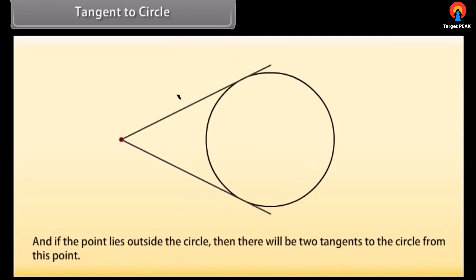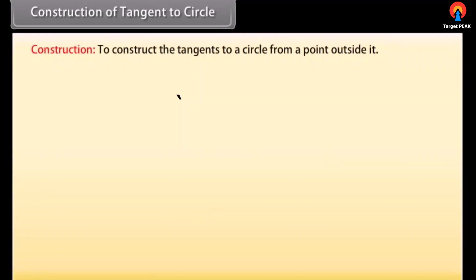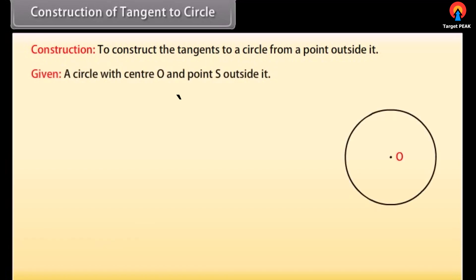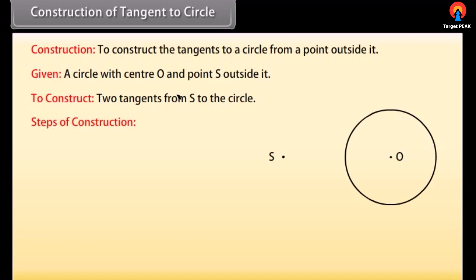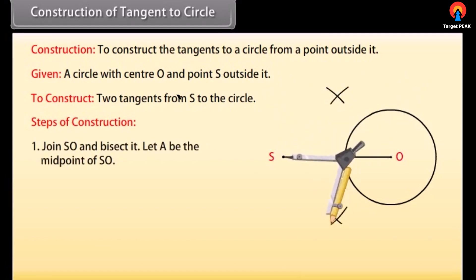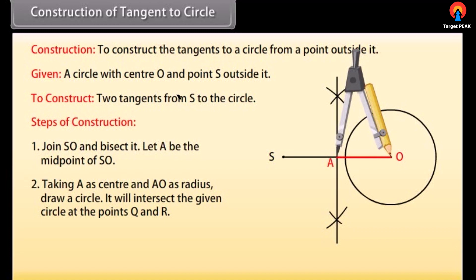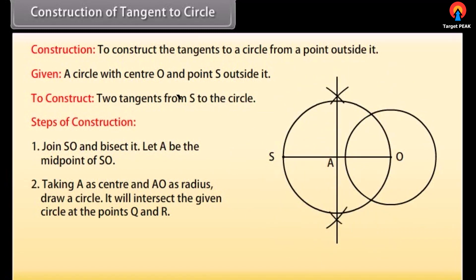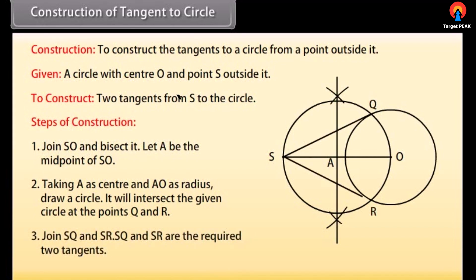If the point lies outside the circle, then there will be two tangents to the circle from this point. Construction: To construct the tangents to a circle from a point outside it. We are given a circle with center O and a point S outside it. We have to construct the two tangents from S to the circle. Steps of Construction: Join SO and bisect it; let A be the midpoint of SO. Taking A as center and AO as radius, draw a circle. It will intersect the given circle at the points Q and R. Join SQ and SR. SQ and SR are the required two tangents.